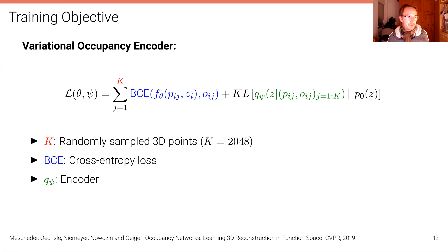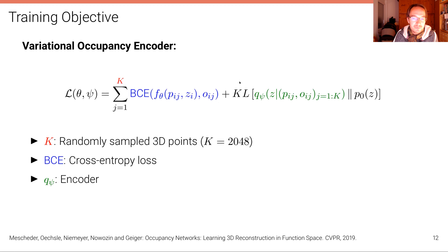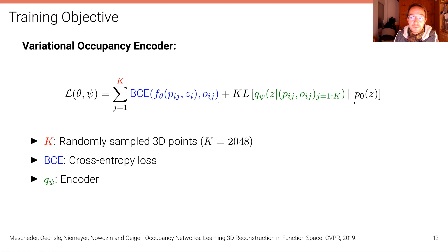We can also extend this model to a generative model. You can build both GANs and autoencoders here. In this case it's a variational autoencoder — a variational occupancy encoder — just a VAE with a reconstruction loss using the BCE loss, plus a KL divergence of an encoder. This encoder takes a point cloud as input and predicts the latent code, compared to a standard Gaussian distribution. This is a standard VAE formulation to learn from a collection of 3D shapes a generative model of the 3D shape distribution.